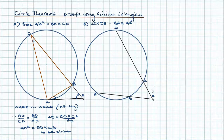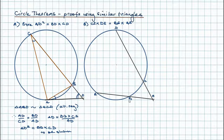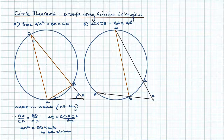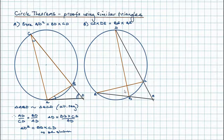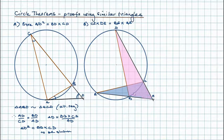Let's join up the points — you might want to pause the video and see if you can recognise the classic theorem being used to prove similarity. First connect D and B, then A and C. What we've got here looks like a bow-tie theorem setup. For our theorem we want to include the outside segments, so the two triangles we need are the overlapping ones.